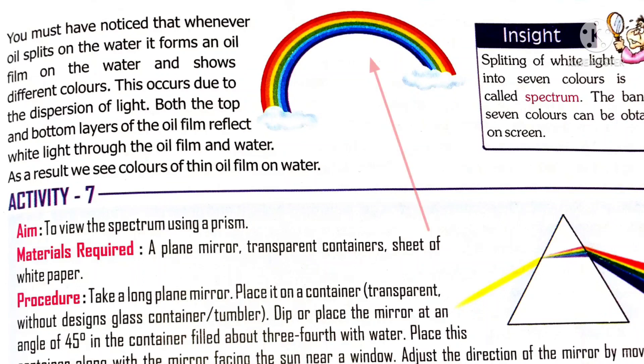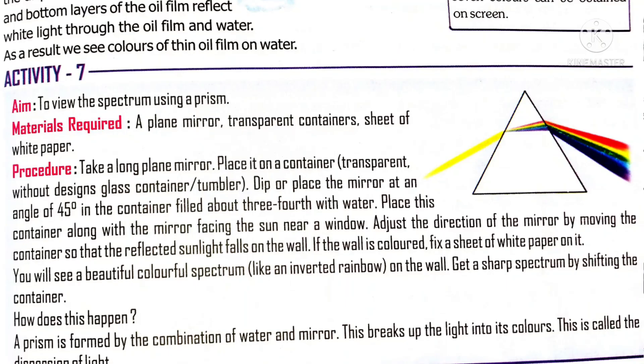Sir Isaac Newton was the first to obtain the spectrum of sunlight by passing it through a prism. He passed a narrow beam of sunlight through a prism and placed a white screen behind it. He observed that a band of different colors was formed on the screen — VIBGYOR: violet, indigo, blue, green, yellow, orange, and red.